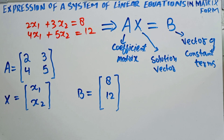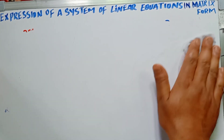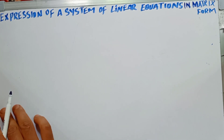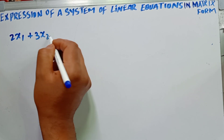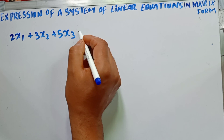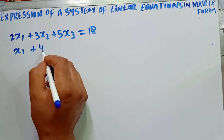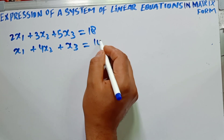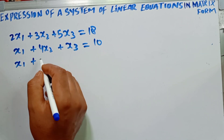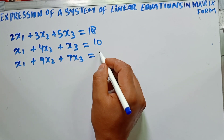Now let me give another example to make my point clear. I have another system of linear equations: 2x1 plus 3x2 plus 5x3 is equal to 18; the second linear equation is x1 plus 4x2 plus x3 is equal to 10; and the third one is x1 plus 9x2 plus 7x3 is equal to 13.